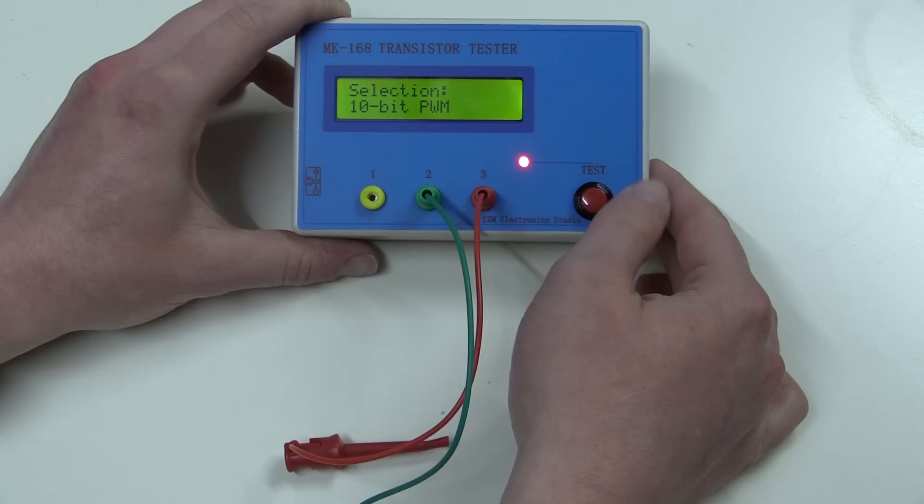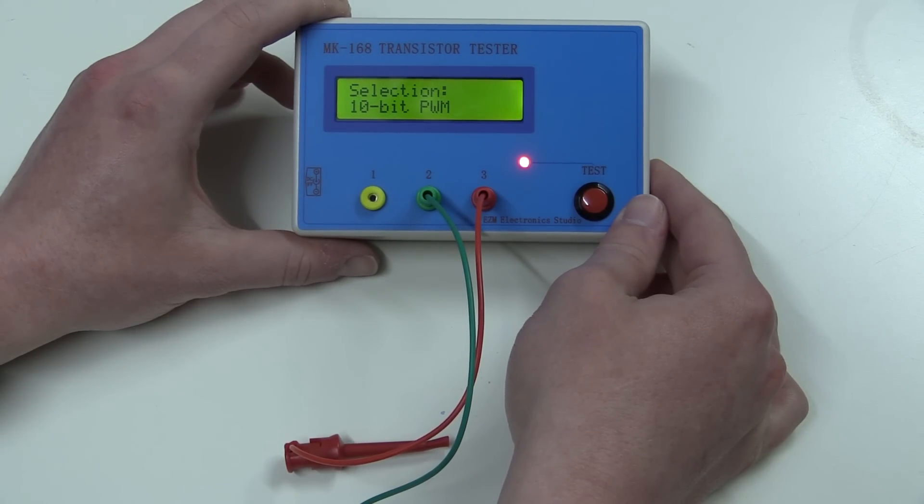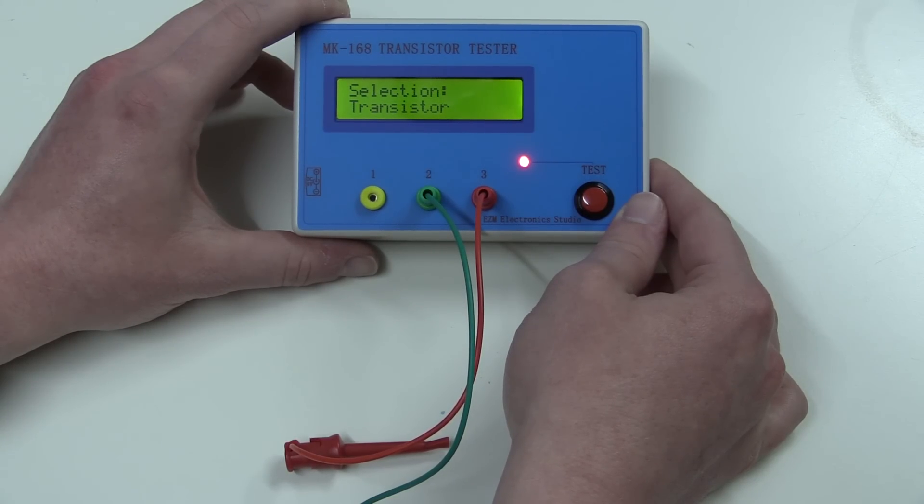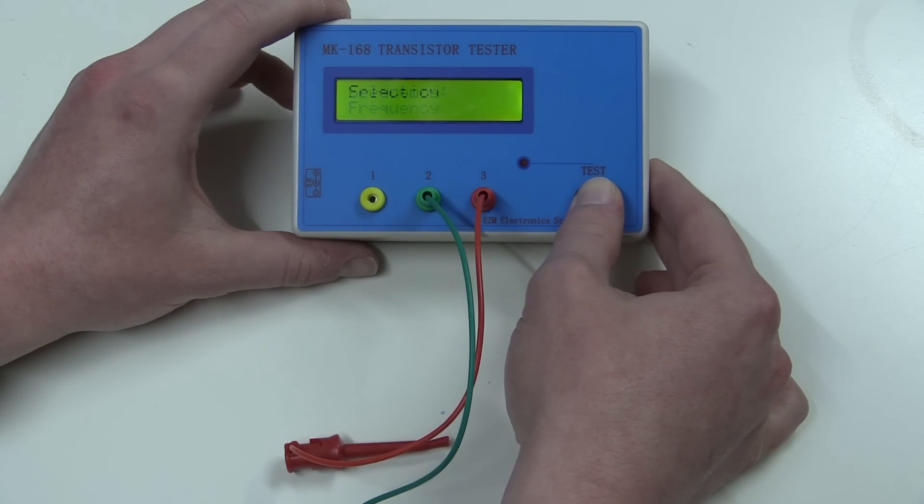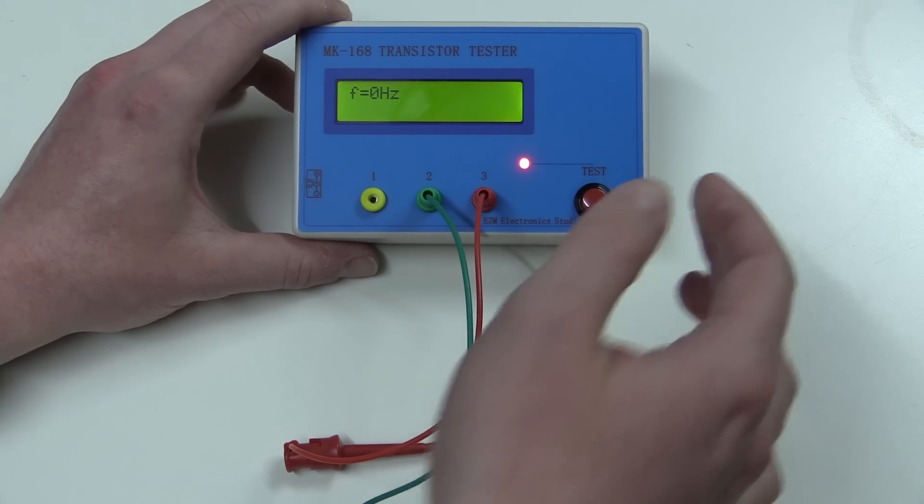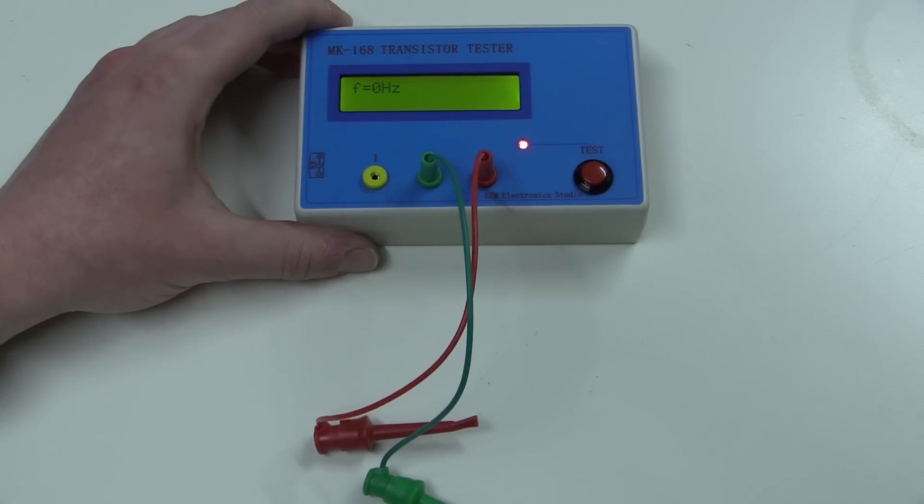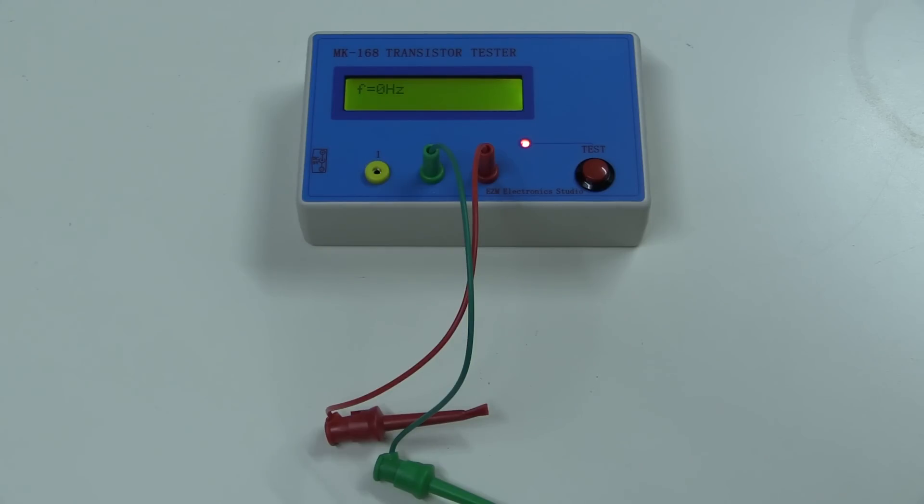We get a frequency generator. We also get a 10-bit pulse width modulation. We get this, I'm not sure what on earth this is supposed to be. We get switch off. Once again our transistor tester and we get frequency counter. You can see it is a frequency counter. Now let's go ahead to the test bench and see if we can get all these different modes to work.